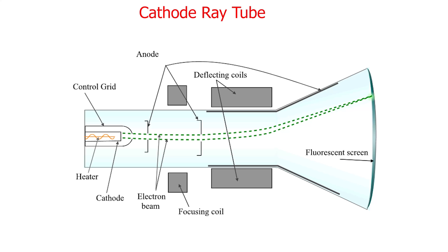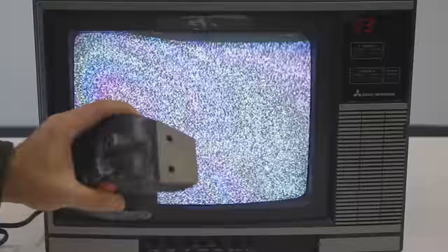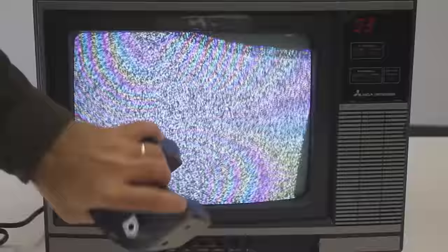Originally, TVs used cathode ray tubes, also called vacuum tubes, to shoot electrons that would hit a specific point or phosphor on the screen to light it up. These were really fun to play with because you could change where the electrons would hit by moving magnets close to it. But they were huge and heavy and didn't have high resolution.